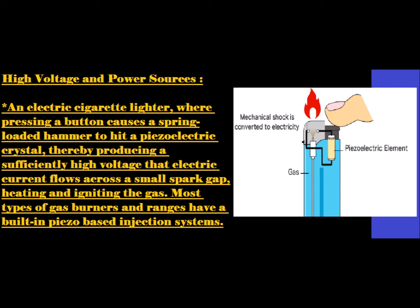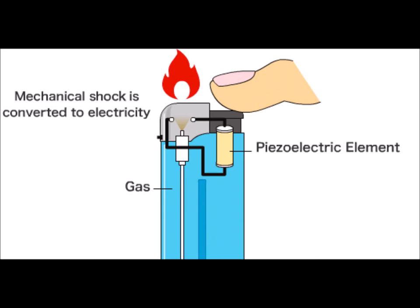The first application is high voltage and power sources. A common example is the electric lighter used day-to-day. When we press it, a spring-loaded hammer connects with a piezoelectric crystal, the hammer causes the crystal to deform, mechanical stress develops, and an electric spark is produced. As you can see in the image, the piezoelectric element is pressed, its size deforms, two cables carry the voltage up to where the liquid gas is, and the spark converts it into fire.